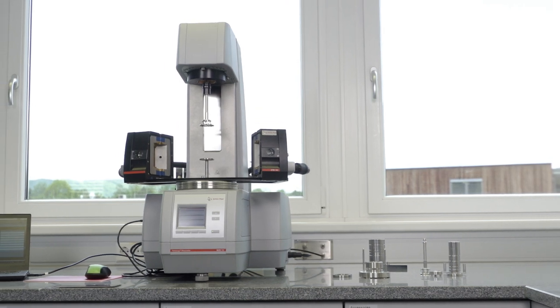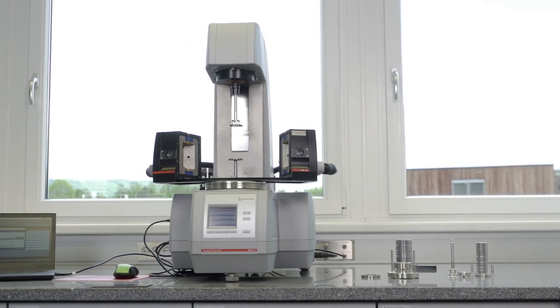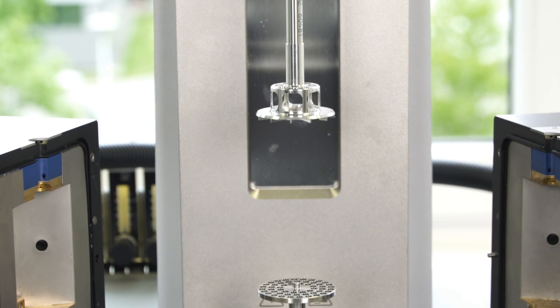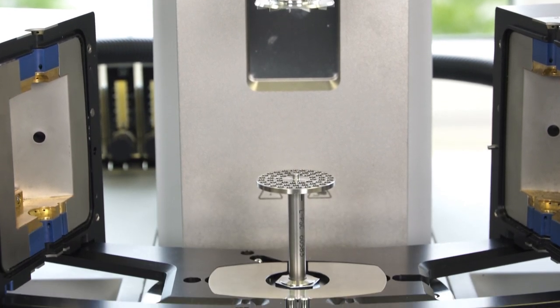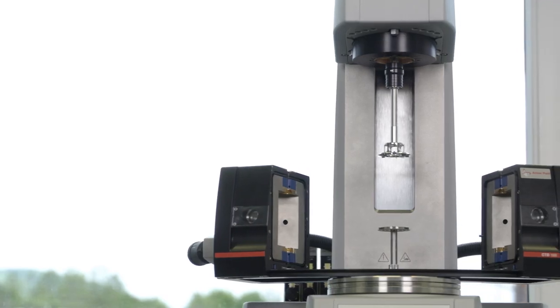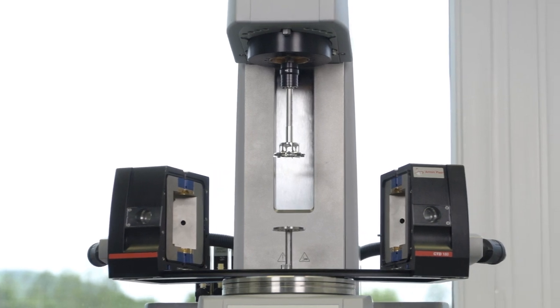In this video, we will show you how to operate the powder shear cell, one of two accessories for the modular MCR rheometer series, which turns it into a high-precision system for powder characterization. In addition, a powder flow cell is also available.